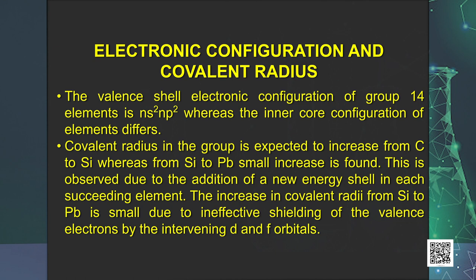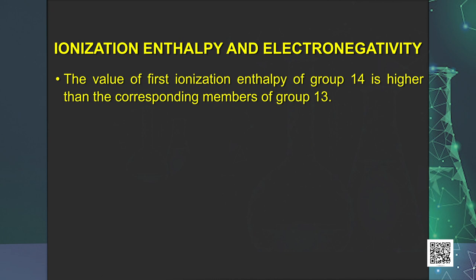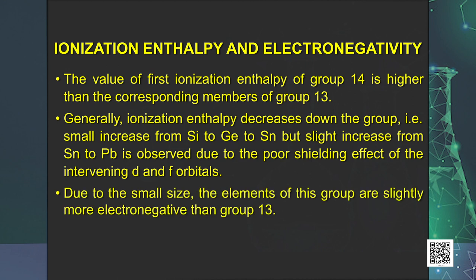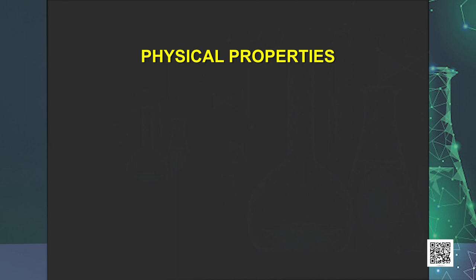This is observed due to the addition of a new energy shell in each succeeding element. The increase in covalent radii from silicon to lead is small due to ineffective shielding of valence electrons by the intervening d and f orbitals. The value of first ionization enthalpy of group 14 is higher than the corresponding members of group 13. Although ionization enthalpy decreases down the group, a slight increase from tin to lead is observed as a consequence of the poor shielding effect of intervening d and f orbitals. Due to their small size, the elements of this group are slightly more electronegative than group 13.